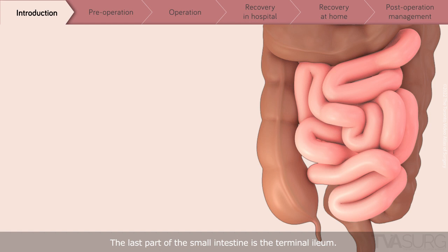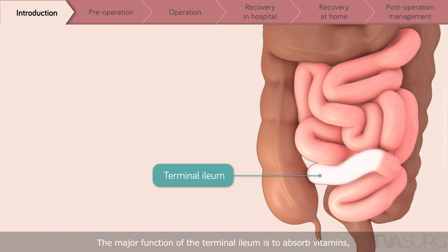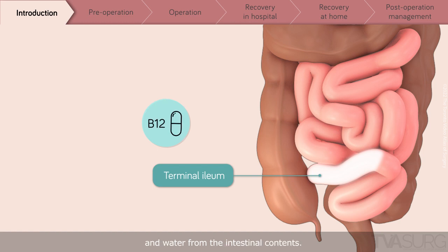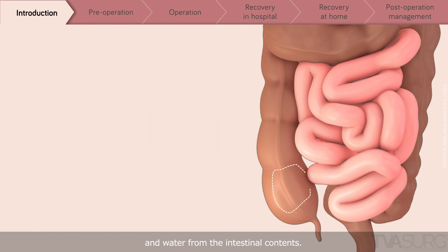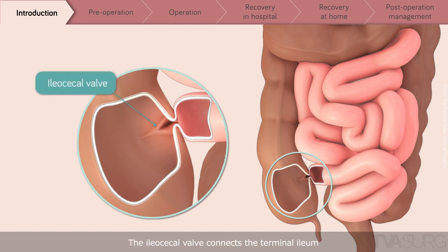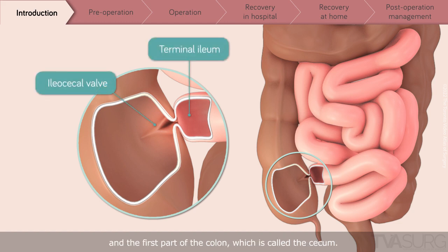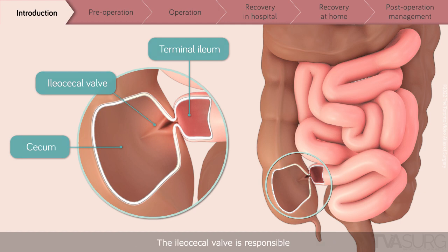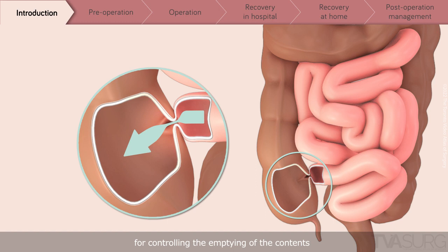The last part of the small intestine is the terminal ileum. The major function of the terminal ileum is to absorb vitamins, for example B12, and water from the intestinal contents. The ileocecal valve connects the terminal ileum and the first part of the colon, which is called the cecum.